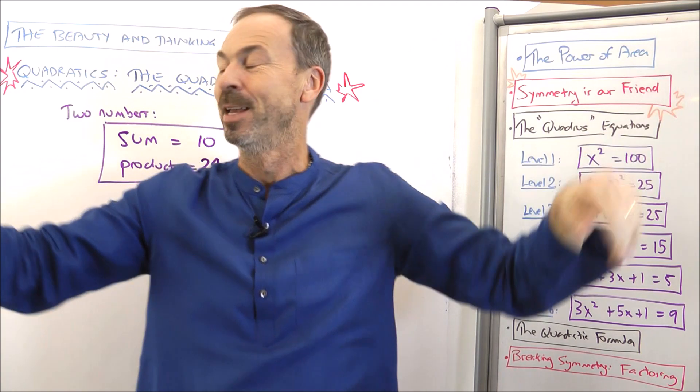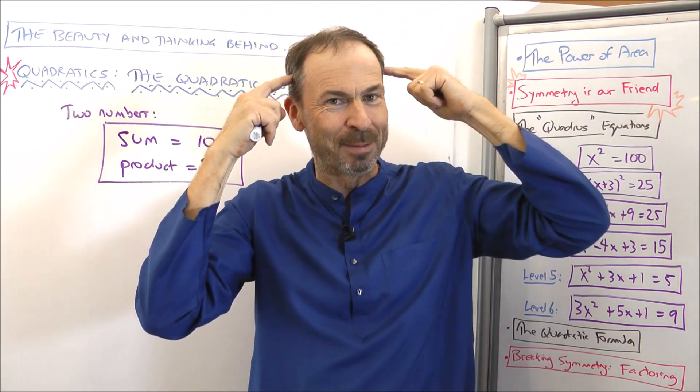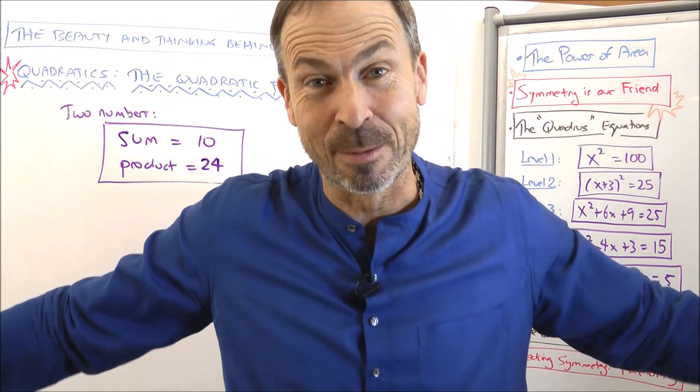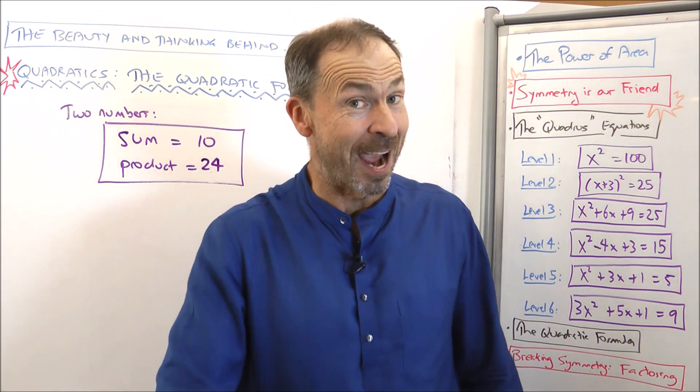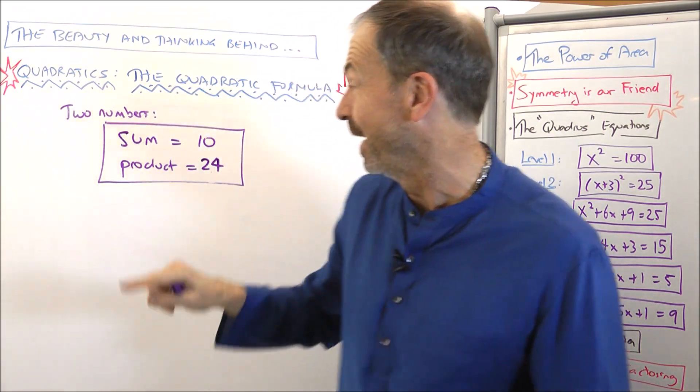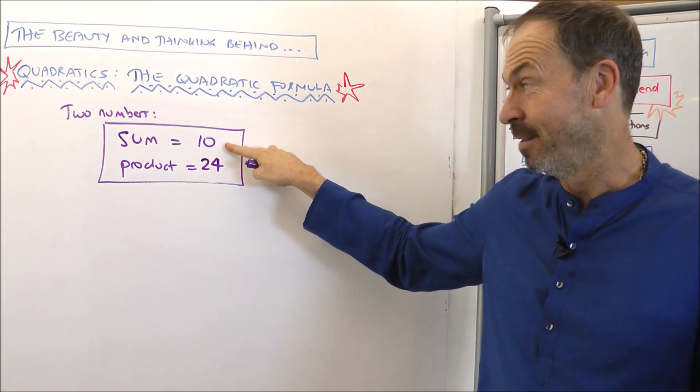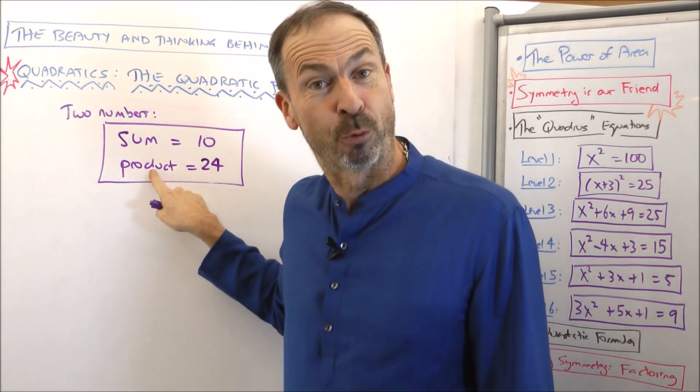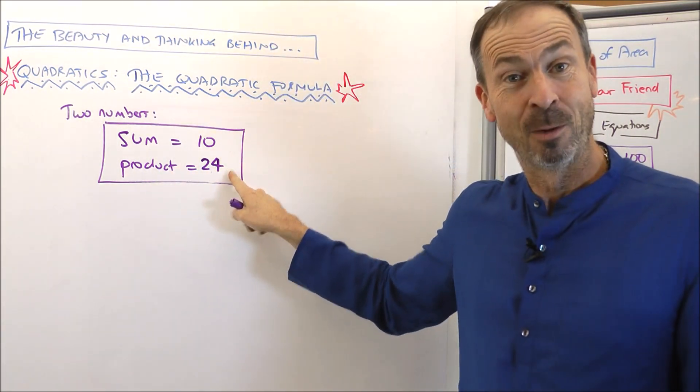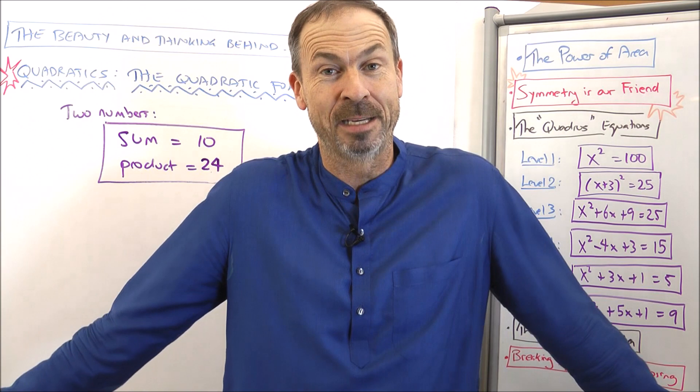All right, but to get us going, here's a puzzle. I'm thinking of two numbers. I'm not going to tell you what my numbers are, but I will tell you two facts about my two numbers. Namely, they sum to 10 and they multiply together to give a product of 24. What two numbers sum to 10 and multiply to give 24?